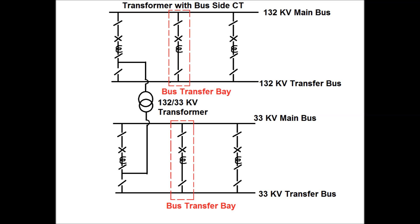Now, a transformer with bus side CT arrangement has been shown. A single line diagram for a 132kV/33kV transformer is shown here. Both the CTs — that is 132kV CTs and 33kV CTs, i.e. HV and LV side CTs — are connected on the bus side. In the 132kV part, we have the 132kV main bus, then bus side isolator, then circuit breaker, then the 132kV CT, and then line side isolator. In the 33kV bay, we have first line side isolator, then 33kV CT, then circuit breaker, then main bus side isolator, and then the 33kV main bus.